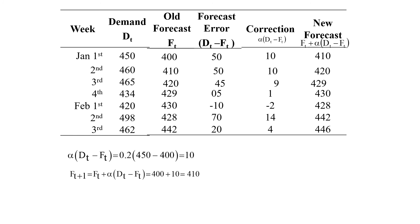we are obtaining. Hence the values of new forecast are: for January first week 410, for January 2nd it is 420, for January 3rd is 429, for January 4th week it is 430, February first week 428, February second 442, and February third week 446, which is what we were asked to find out. Hence this is how the problems on exponential smoothing is being found out. Thank you.